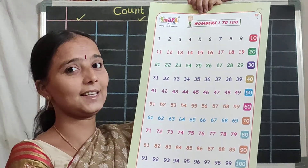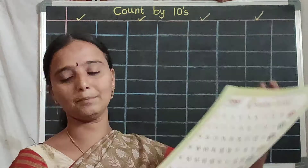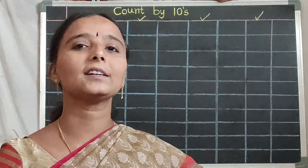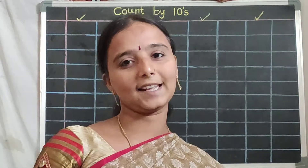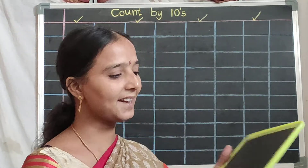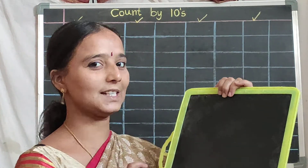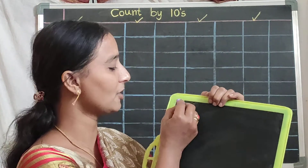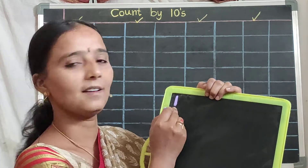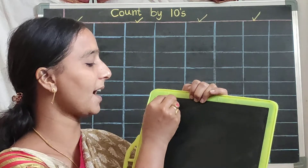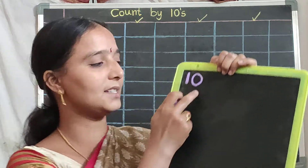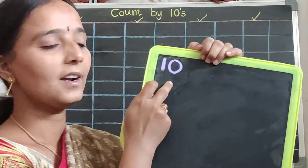Like this you should read and learn those numbers. After that, take your slate and write count by tens on your slate. Write the one and you should write one beside zero — ten.